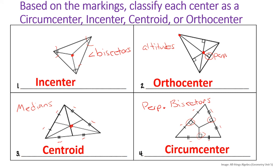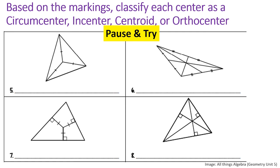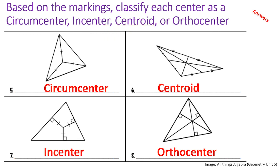Now try these on your own — pause the video and see if you can name the point of concurrency for each triangle. Hopefully you got all four centers of triangles correct: circumcenter, centroid, incenter, and orthocenter.